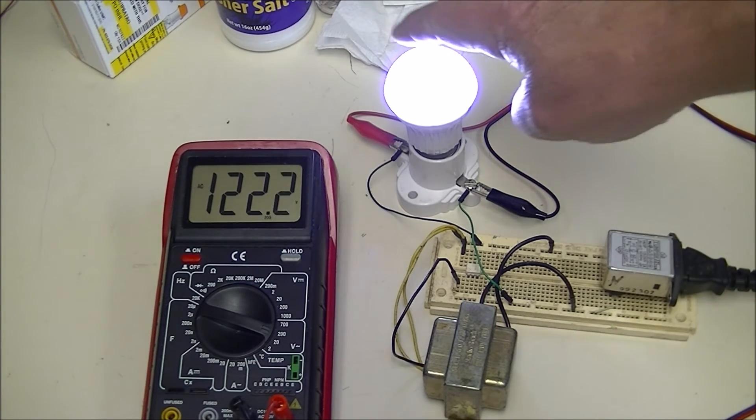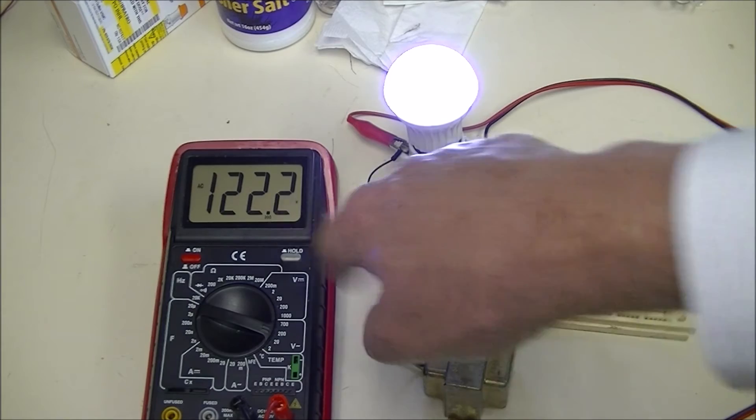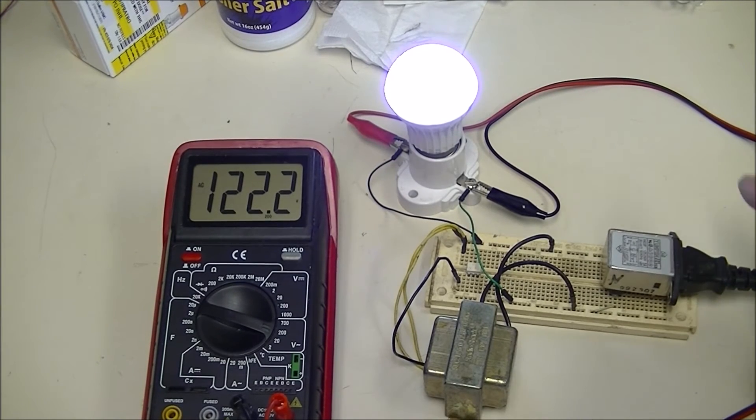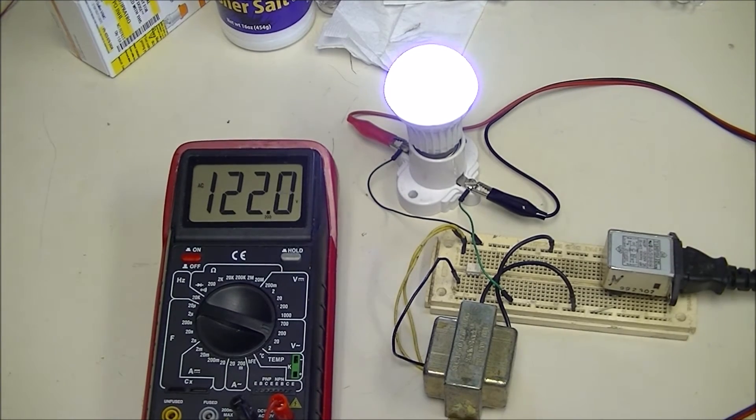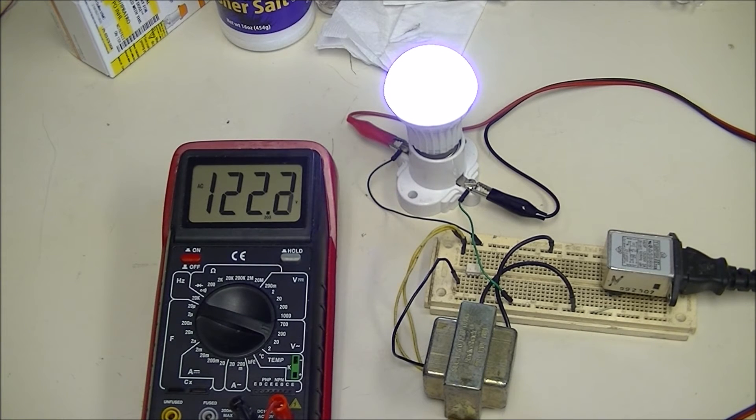This is just an LED lamp. This is the present voltage coming from the power line through this connector, 122 volts.